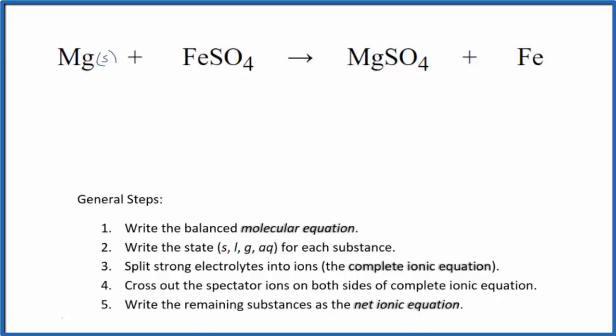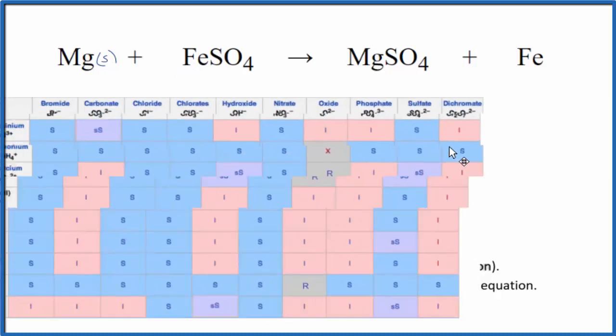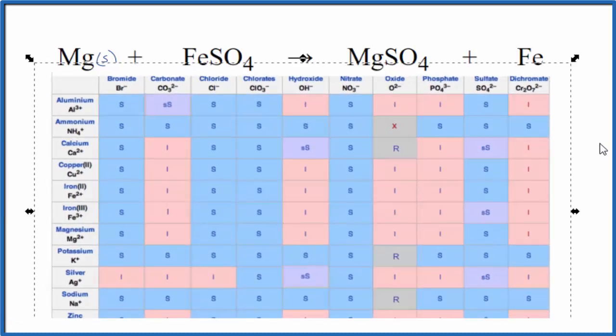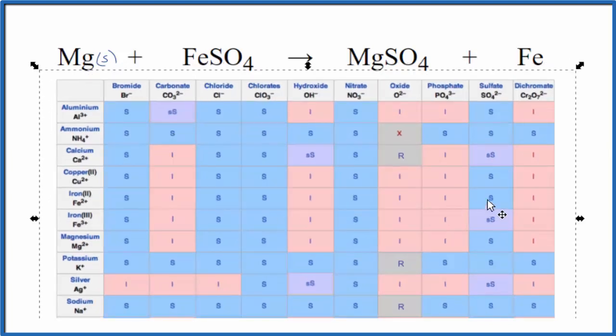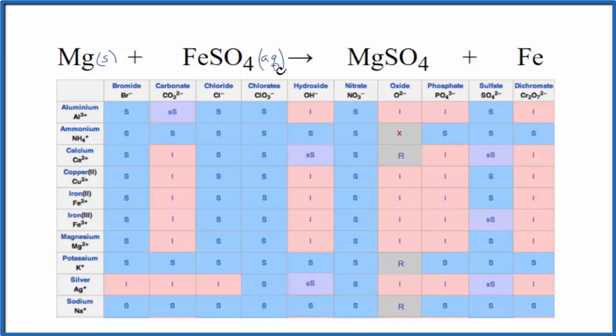And then iron sulfate. Let's look that up on a table of solubility. Sulfates are often soluble. Here is iron 2, and then the sulfate. See that S there tells us that it will be soluble in water. So we can write AQ, aqueous. It's going to dissolve, break apart into its ions.